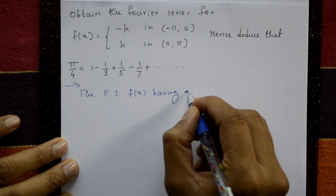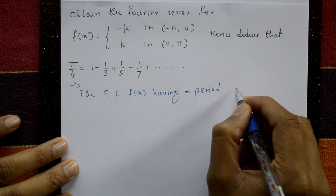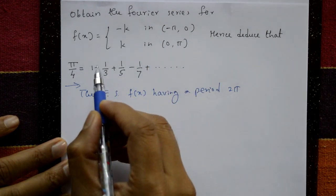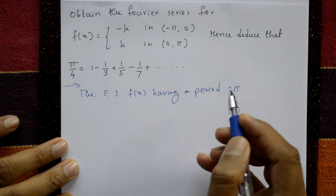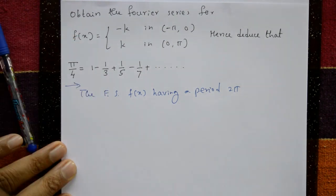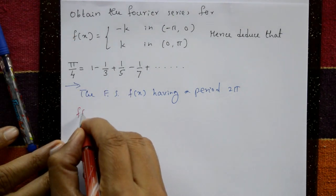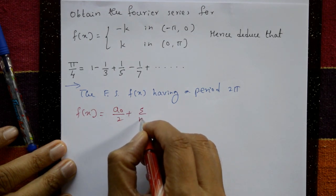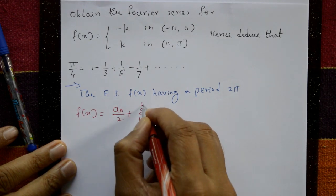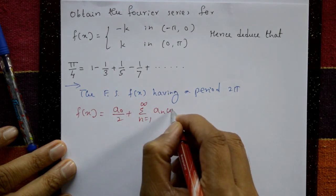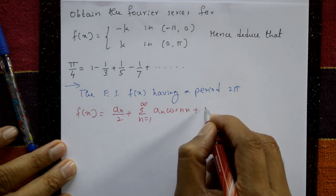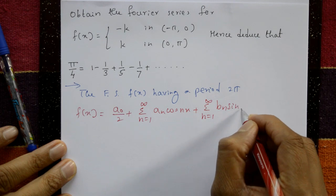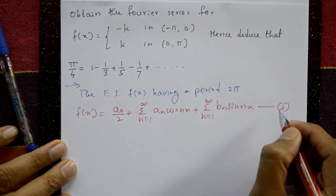The Fourier series has a period of 2π, from minus π to plus π. The Fourier series f(x) is equal to a₀/2 plus summation n=1 to infinity of aₙ cos(nx), plus summation n=1 to infinity of bₙ sin(nx). This is equation number 1.